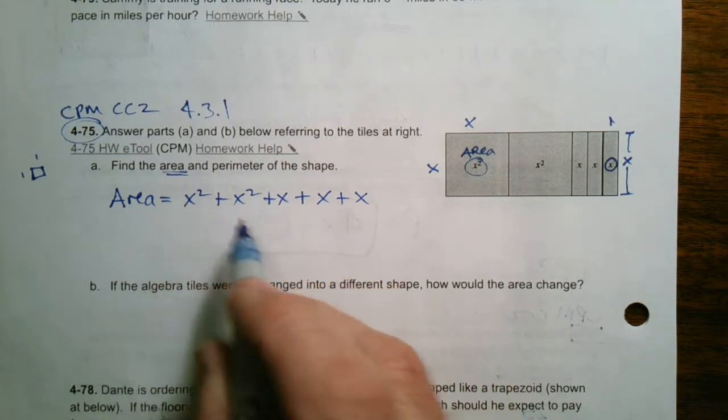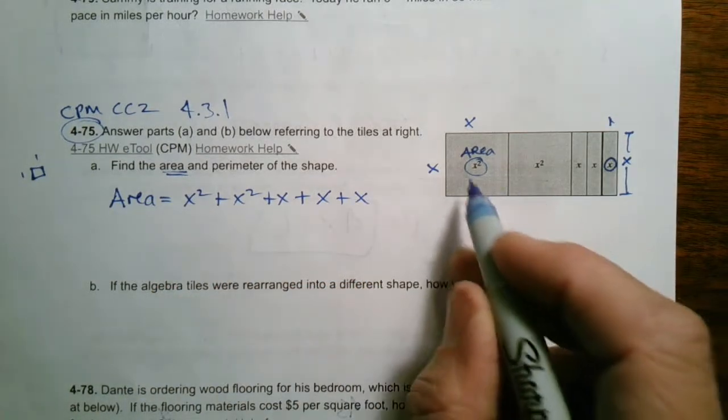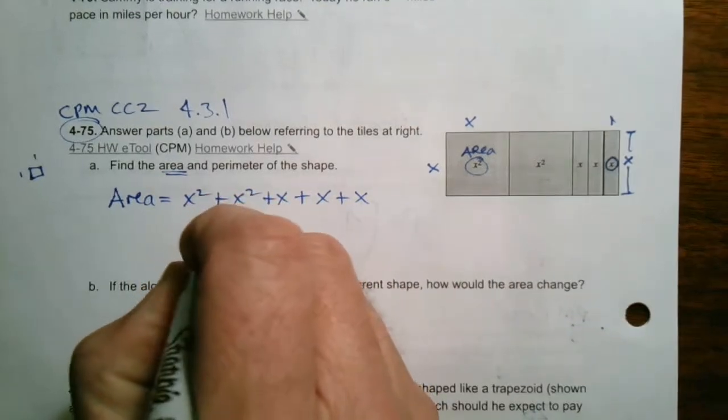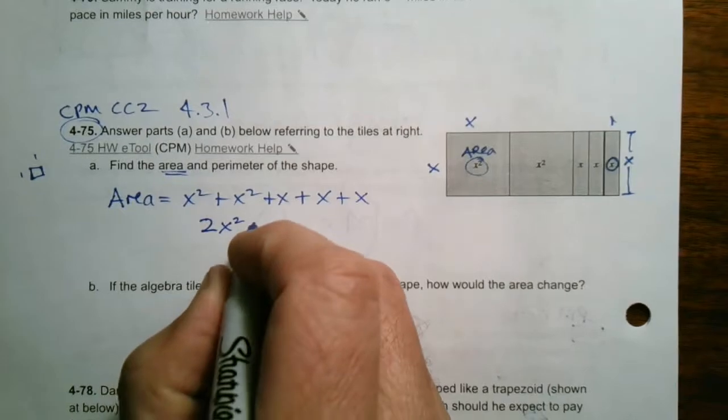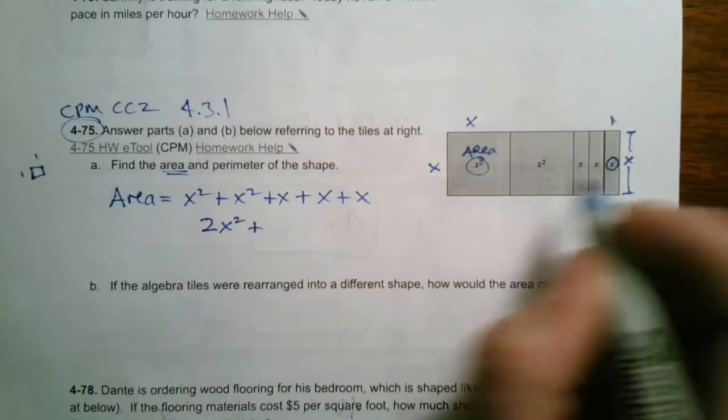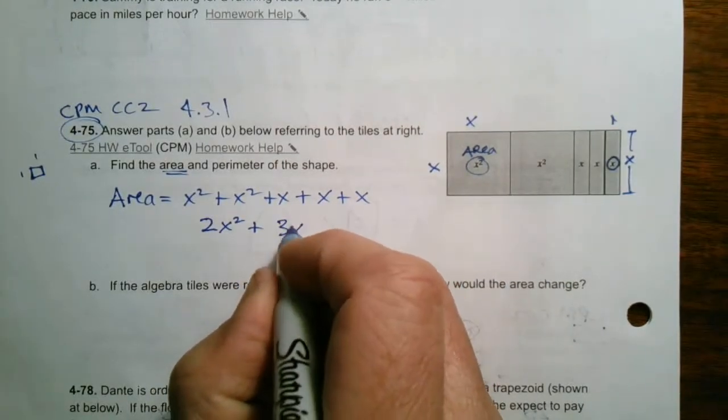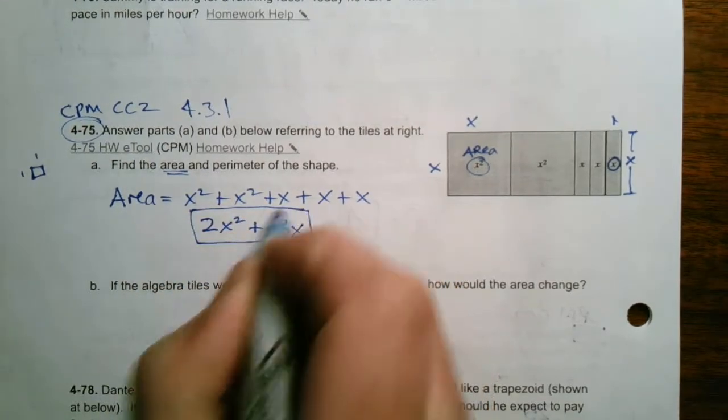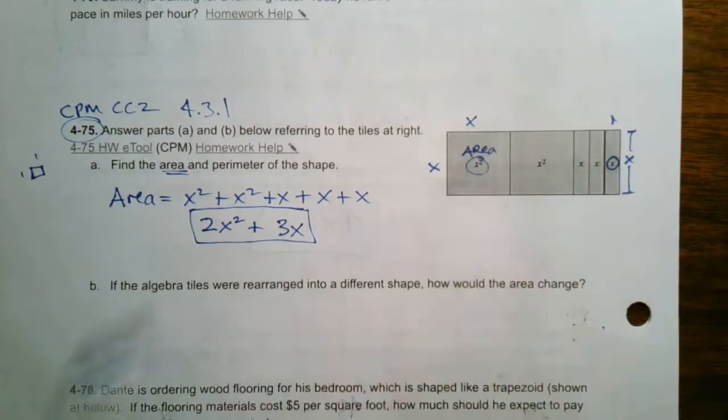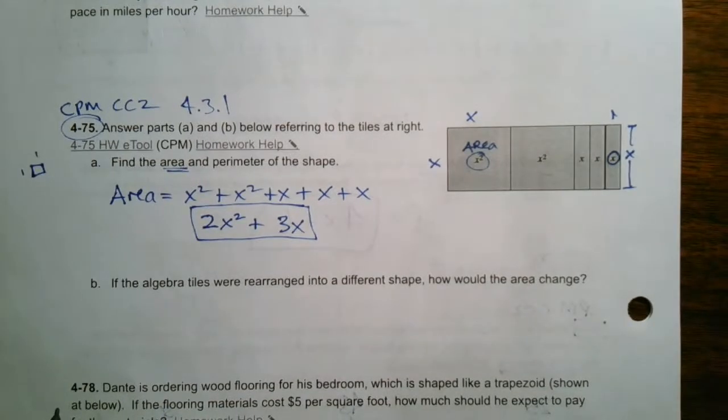We can combine the like terms. If I think about this, I've got how many x-squareds are there? Well, there's two x-squareds. So you would say two times x-squared plus, and then how many x's? There's three. So you would say plus three times x. So that right there would be the simplified version of that area of that set of tiles.